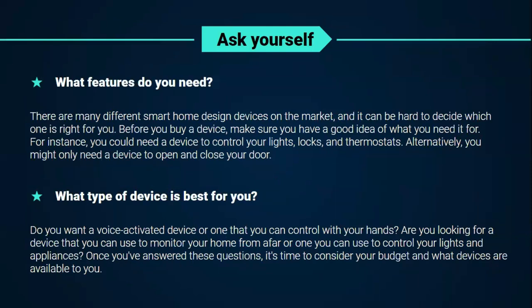Ask yourself: what features do you need? There are many different smart home devices on the market and it can be hard to decide which one is right for you. Before you buy a device, make sure you have a good idea of what you need it for. For instance, you could need a device to control your lights, locks, and thermostat. Alternatively, you may only need a device to open and close your door. Do you want a voice-activated device or one you can control with your hands? Are you looking for a device to monitor your home from afar or one to control your lights and appliances? Once you've answered these questions, it might be time to consider your budget and what devices are available to you.